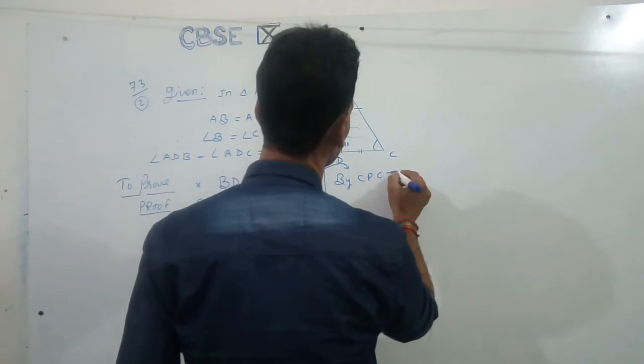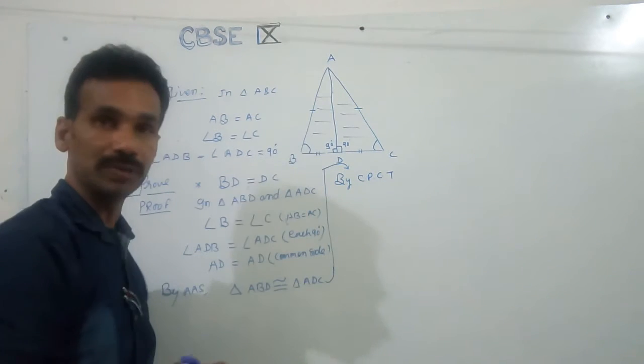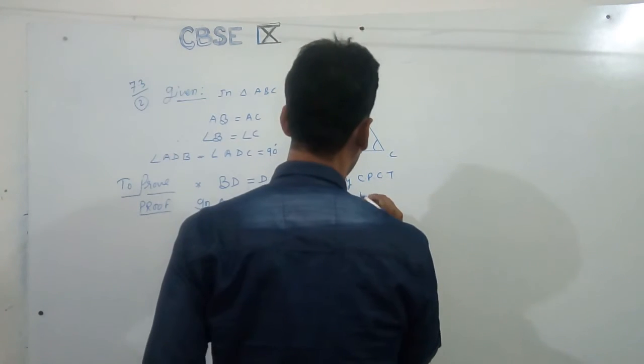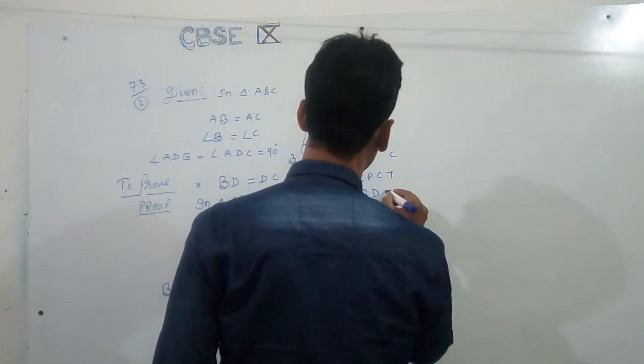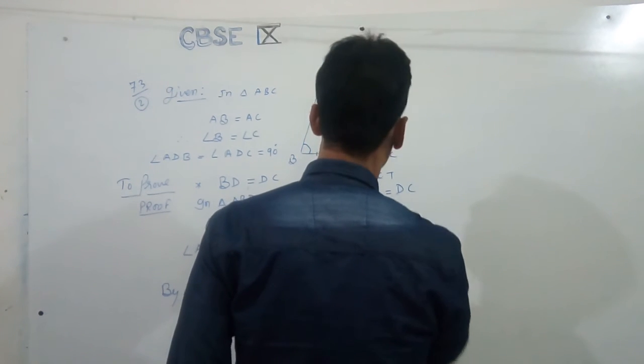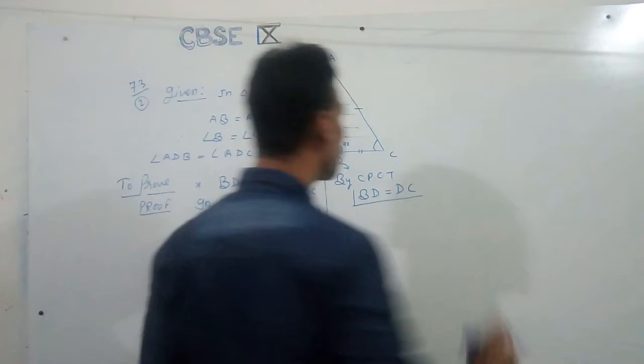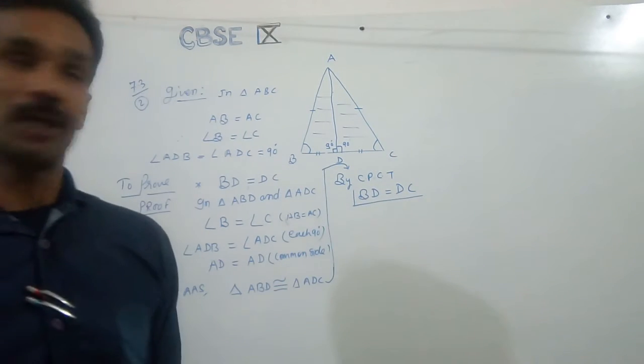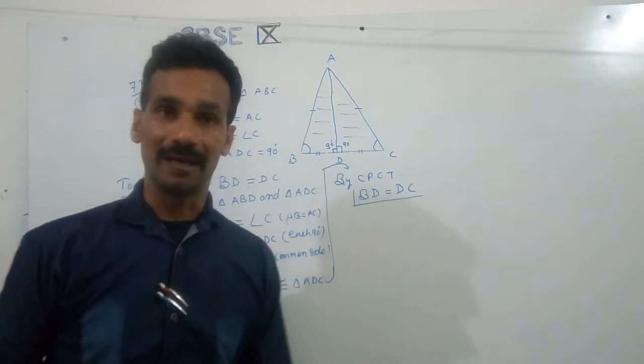By CPCT, BD equal to DC. Then now we will write by CPCT, BD equal to DC, right? CPCT ka full form maloom hooga, corresponding parts of congruent triangles.